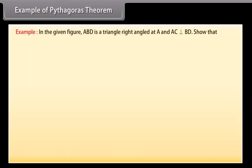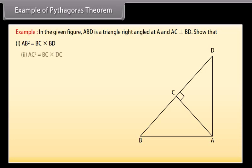Example: In the given figure, ABD is a triangle right angled at A, and AC is perpendicular to BD. Show that: (1) AB² = BC × BD, (2) AC² = BC × DC, (3) AD² = BD × CD.